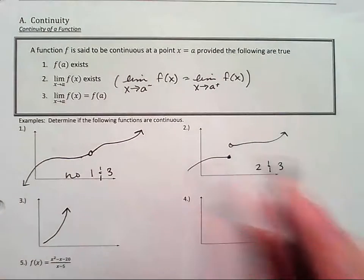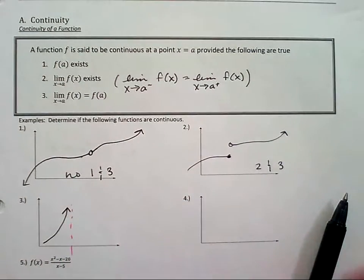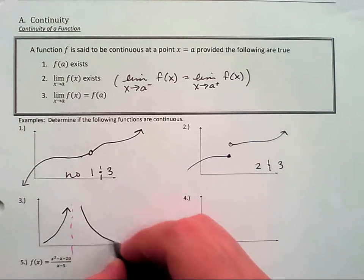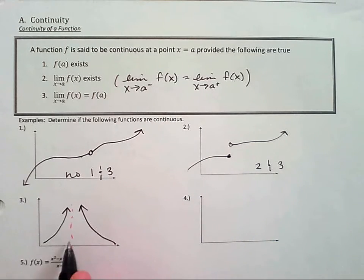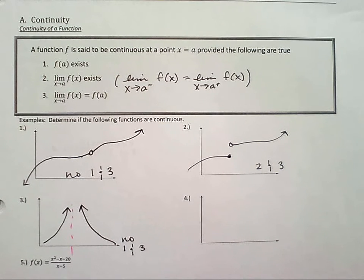I think, David, this is what you were kind of saying. The limit doesn't exist here because of what? One and three. There's no y value to asymptote, therefore...